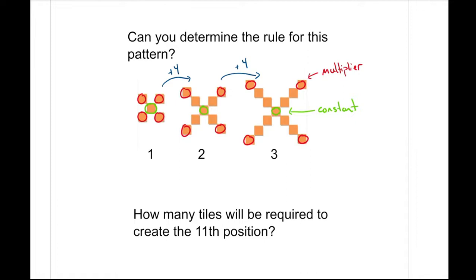You could also reason the constant another way, because if we reverse the pattern and take away four of our blocks, we're at position zero. At position zero, we talked about that whatever our value is there is our constant. We would have only one center block, which would also be our constant.